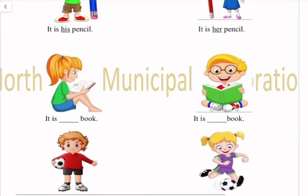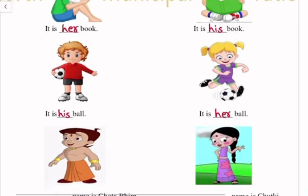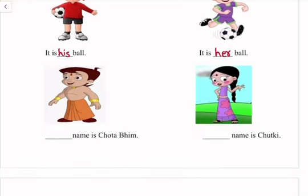It is her book. It is his book. It is his bone. It is her ball. His name is Chota Bheem. Her name is Chutki.